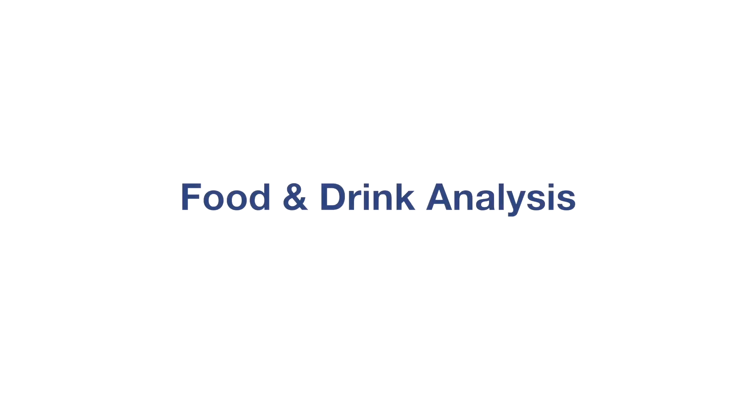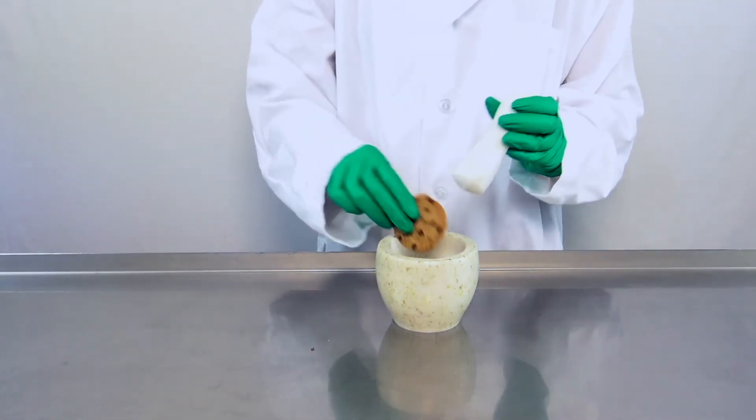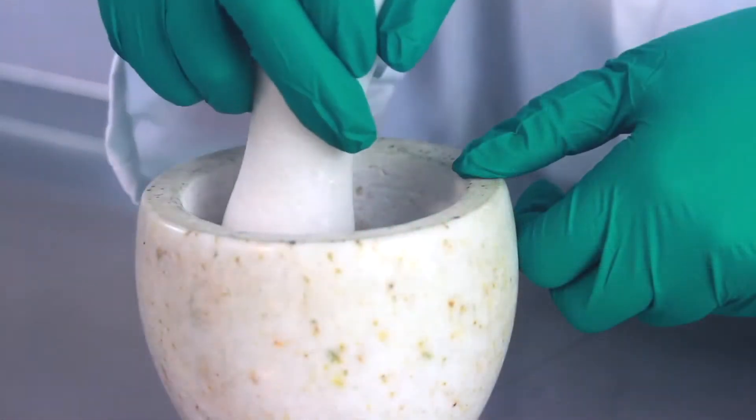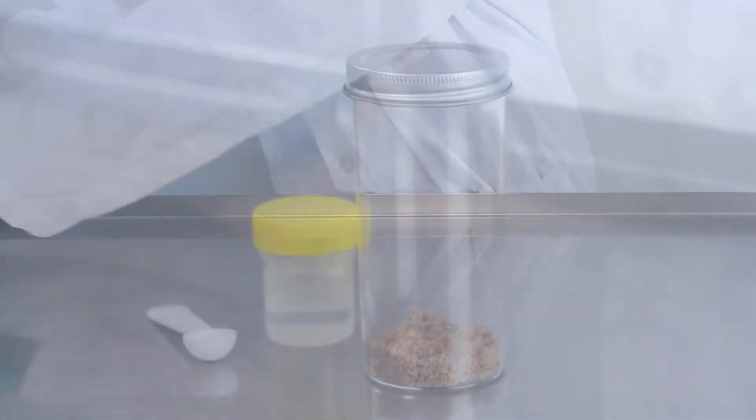Food and drink analysis. For solid food samples use a clean mortar or mincer to break down the sample. Grind to find crumbs. If your sample is a liquid or doughy texture, refer to the manual.